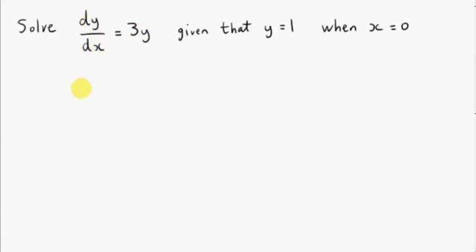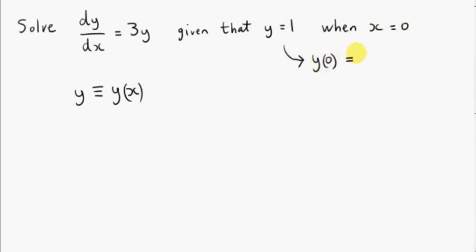So what are we after here? Well, y is some function of x. We want to find a function of x such that when we differentiate with respect to x, we get three times that function. We also want the property that when x is 0, y is 1. We can sum up this boundary condition by saying that y at x equals 0 must equal 1.